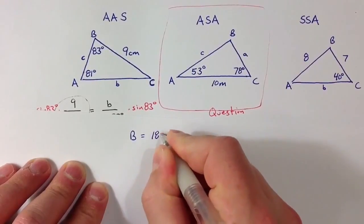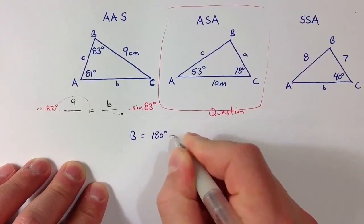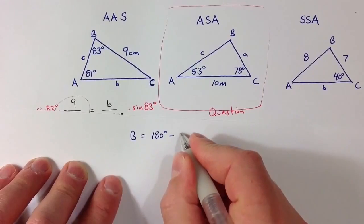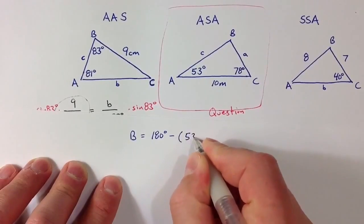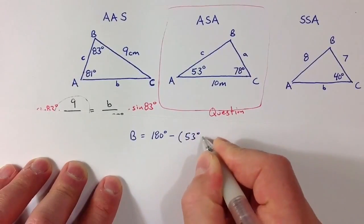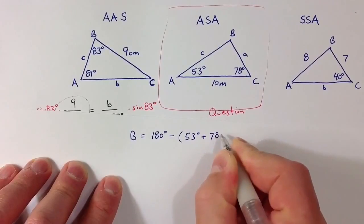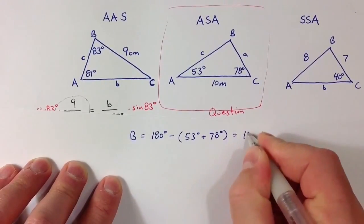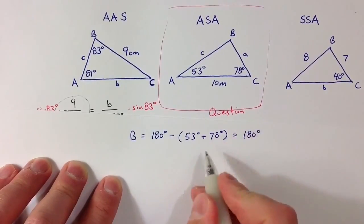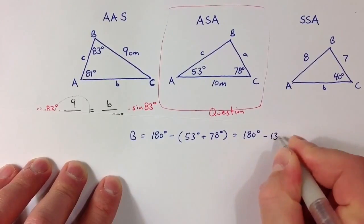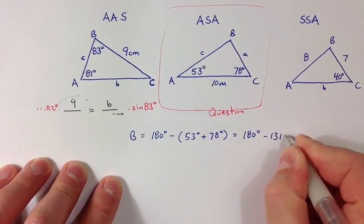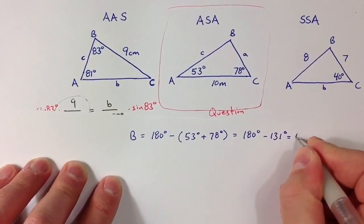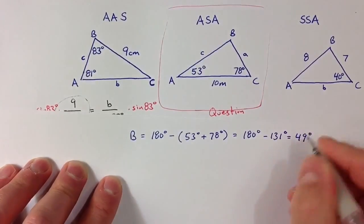That's not hard to do, because we're given the two other angles, and I know that the three angles have to add up to 180 degrees. So I can take the measures of those other two, add them together, and subtract from 180. So I get 180 minus 131 — adding those other two together it's 131 — and so the unknown angle, angle B, is 49 degrees.